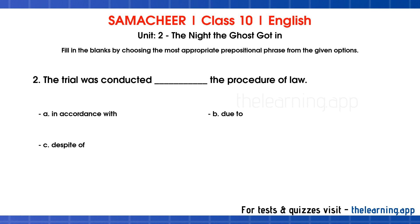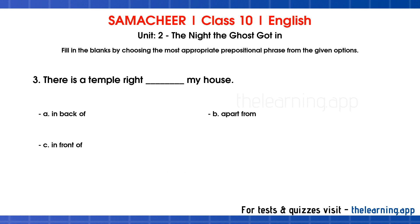Question 2: The trial was conducted — the procedure of law. Options are: a. In accordance with, b. Due to, c. Despite of. Correct answer is a. In accordance with.